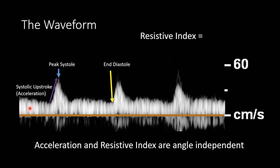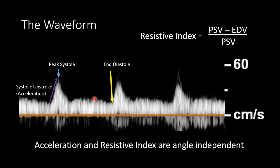We also often look at resistive index, particularly in transplant organs. The resistive index is an assessment of the difference between peak systole and end diastole with respect to peak systole. In a high resistance system, like a transplant organ undergoing rejection or one with venous thrombosis, there will be decreased passive flow, end diastolic velocity will be less than normal, and the resistive index will go up. In a low resistance system such as one with an arteriovenous fistula, there will be increased passive flow, increased end diastolic velocity, and therefore the resistive index will go down. If there is a proximal stenosis that causes a decrease in peak systole, the difference between peak systole and end diastole will be decreased and your resistive index will drop.